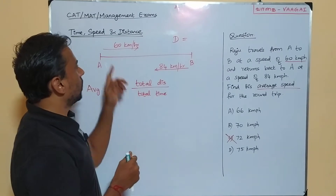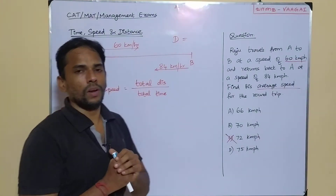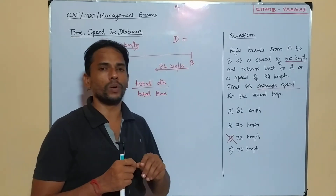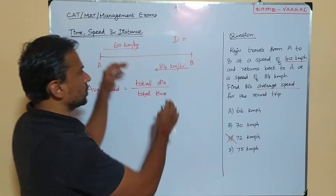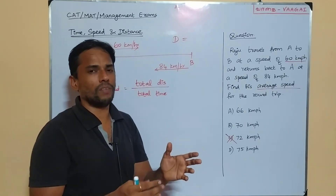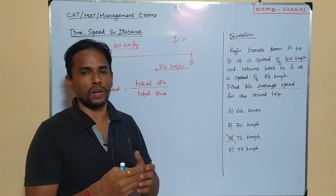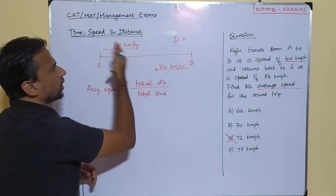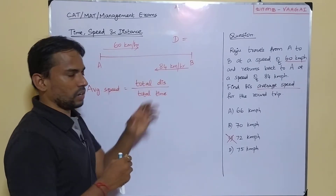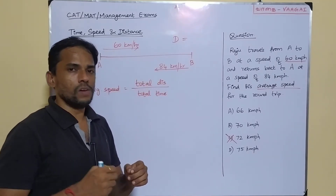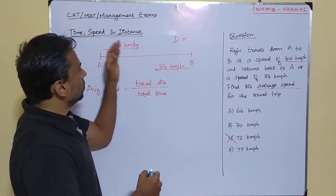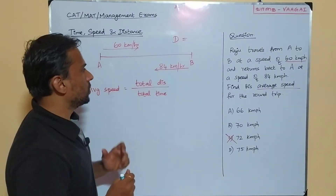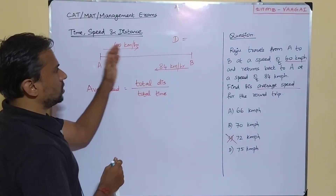Now, the numbers are 60 and 84. We will take a distance value that is divisible by both these numbers — that way our calculation will be comfortable. For that, we can take the LCM of 60 and 84. Let me calculate the LCM of 60 and 84. We can go with the 12 times table first: 12 fives are 60 and 12 sevens are 84. So we will have 12 × 5 × 7 — since 5 and 7 are co-prime. So that is 60 × 7 = 420.